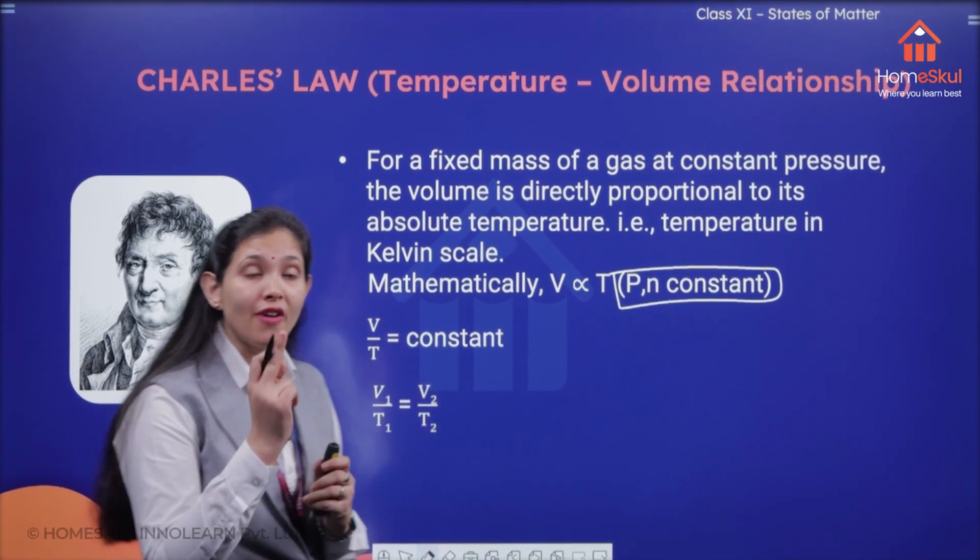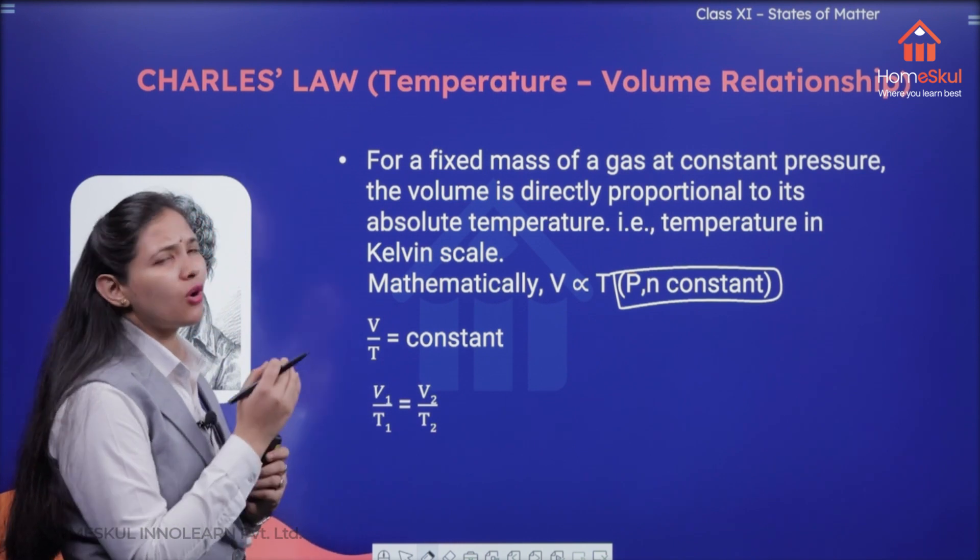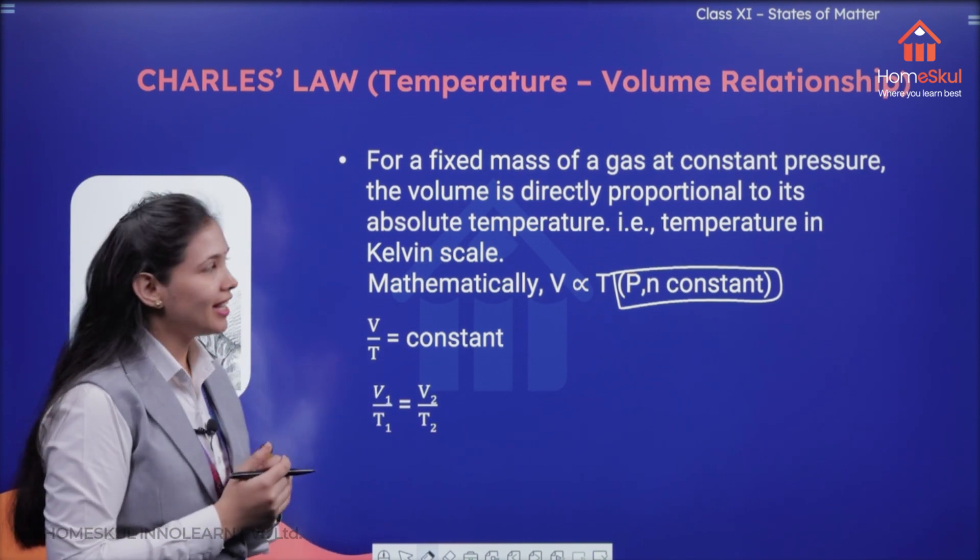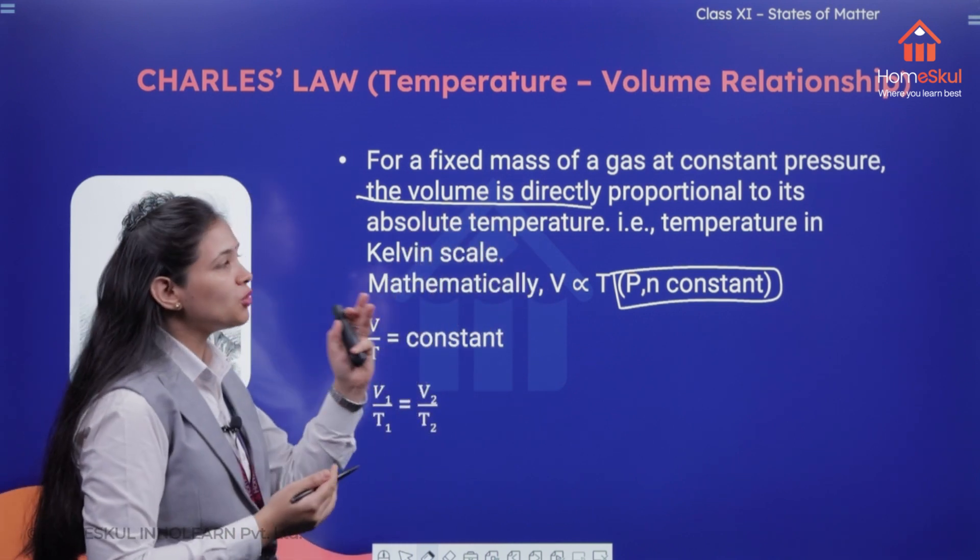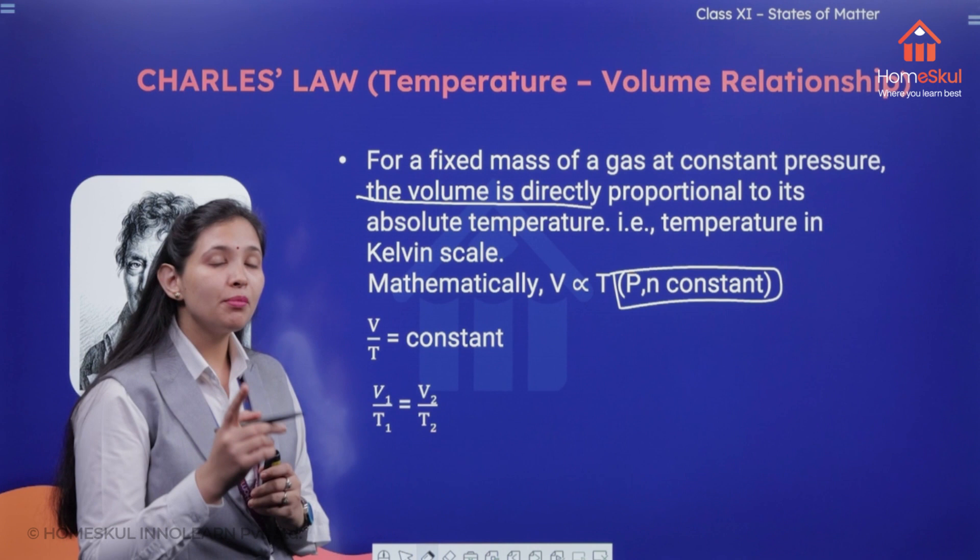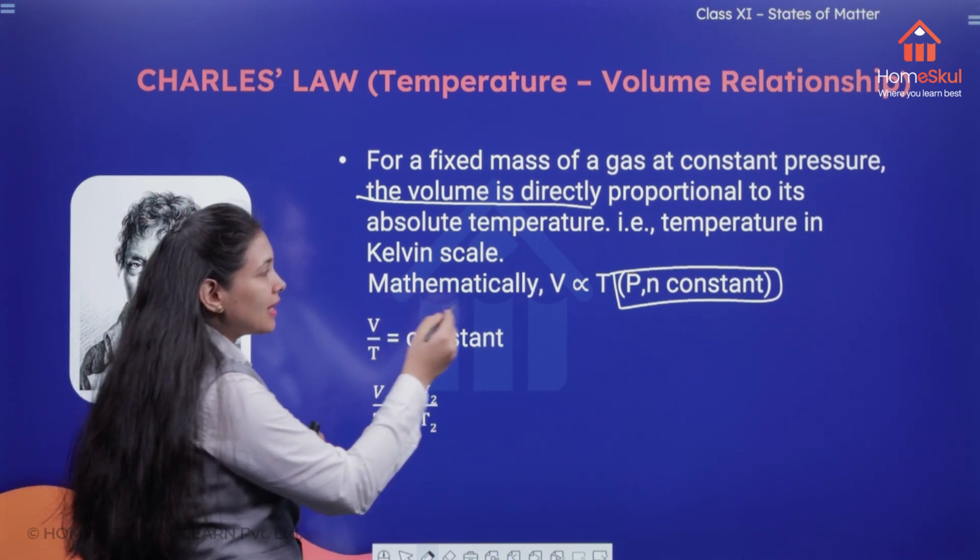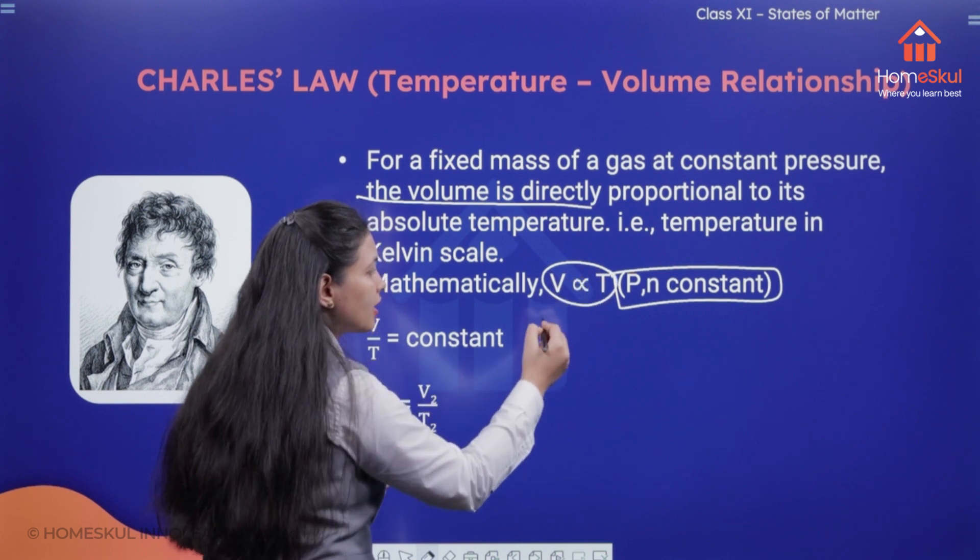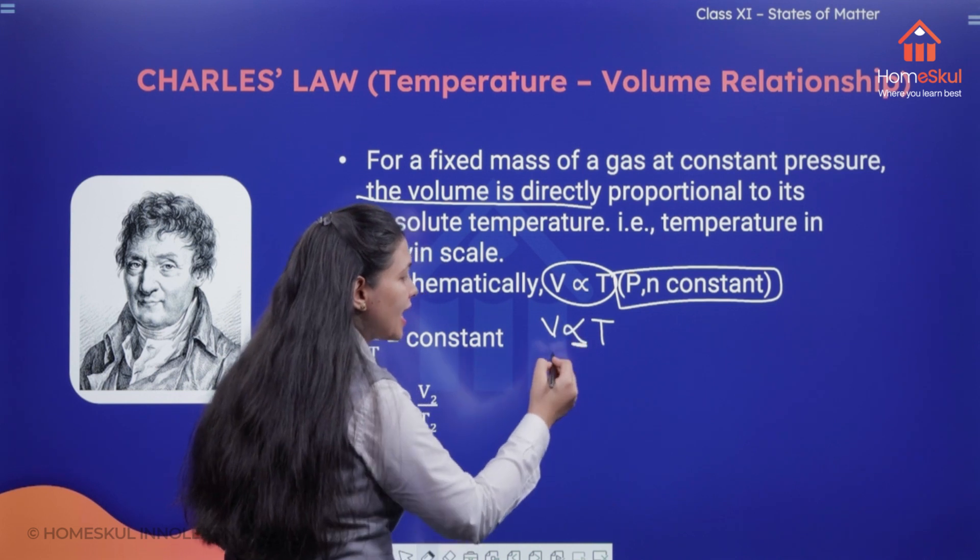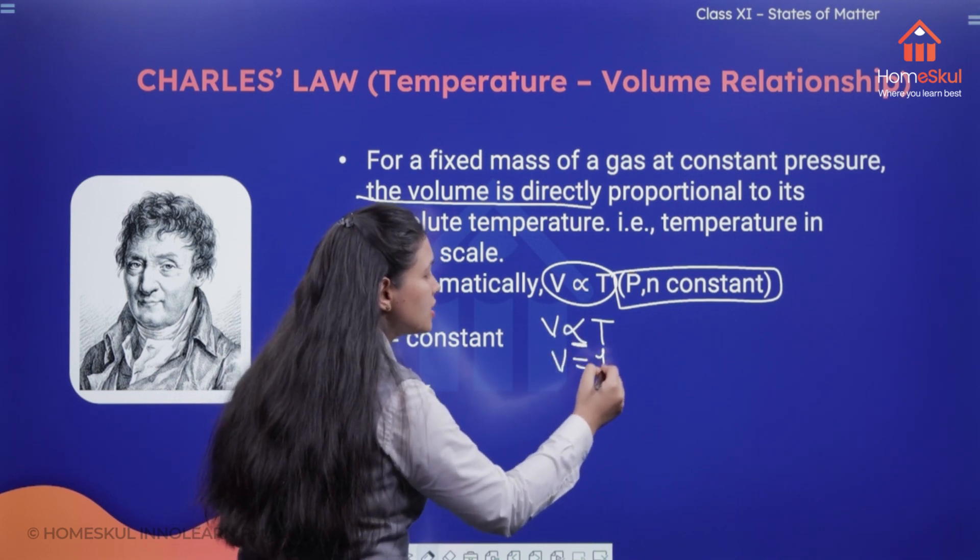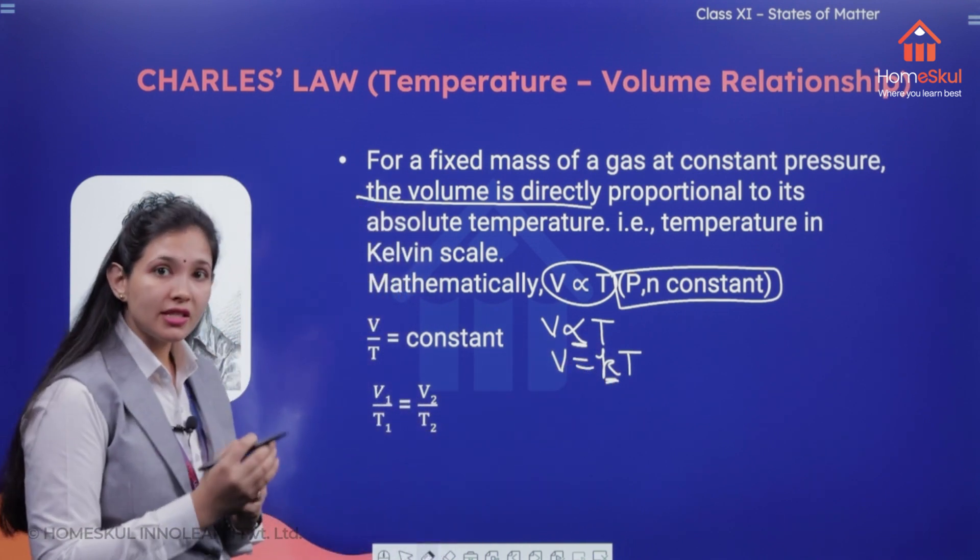What was the law here? That for a fixed amount of gas or fixed mass of gas at constant pressure, the volume is directly proportional to its absolute temperature that is temperature in Kelvin scale. And mathematically he gave this relation that V is directly proportional to temperature. To remove this proportionality sign we can write V is equal to KT and K is going to be the proportionality constant here.